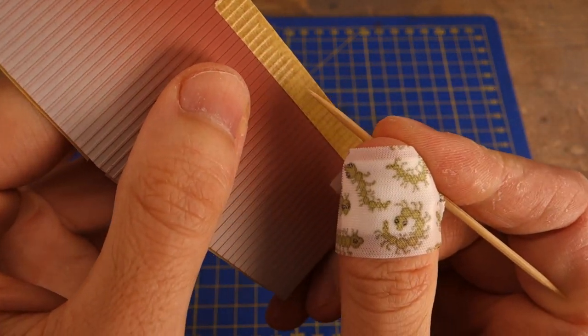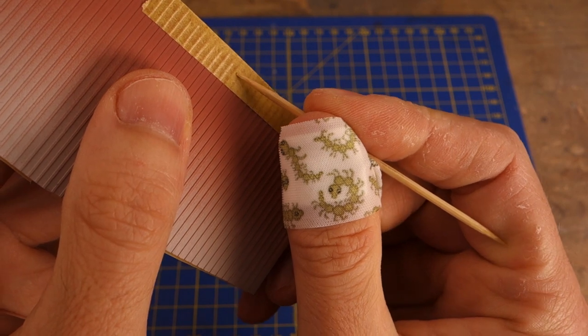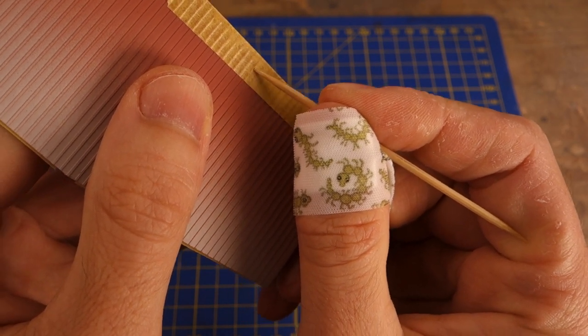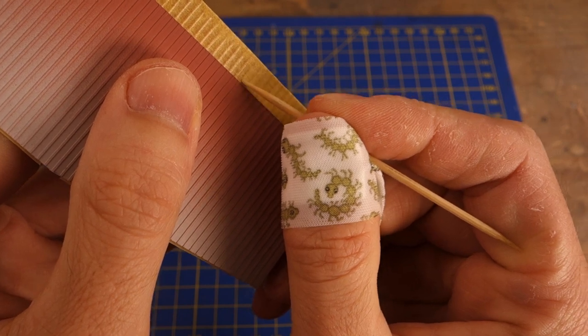I used a toothpick to push the tape into the ribs of the main structure. This is actually the first time I used masking tape to create a multi-color paint job, so feel free to leave any tips in the comments.